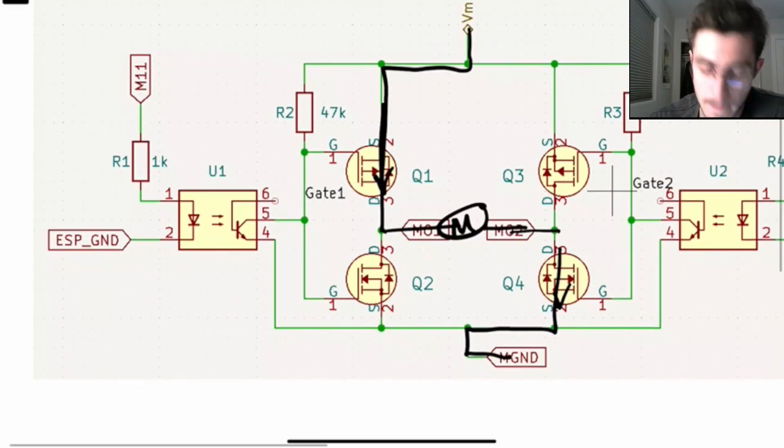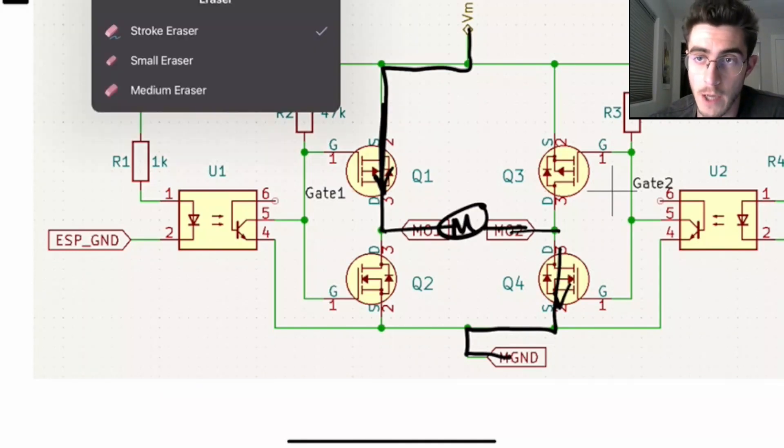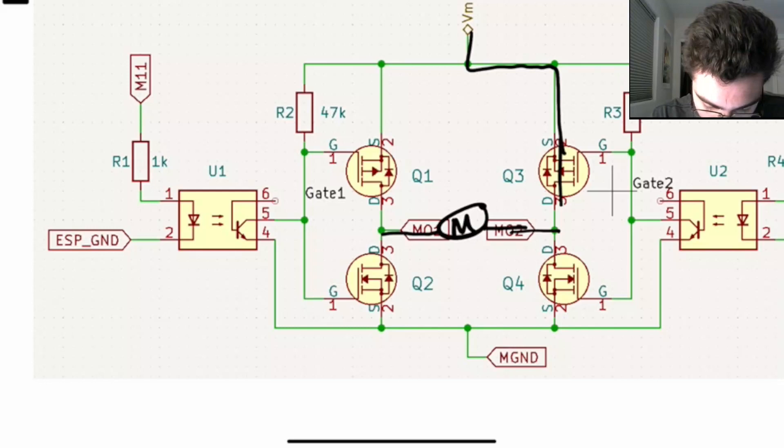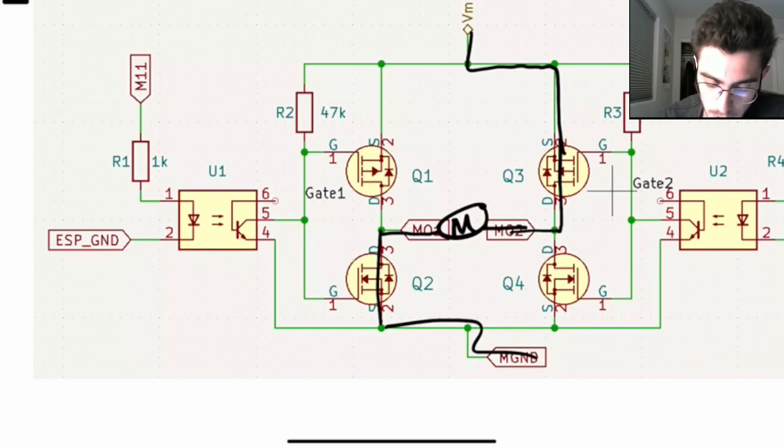Now the cool thing about this circuit is you can just do the complete opposite in order to turn the MOSFETs, sorry, to turn the motor in the other direction. So let's say you turn on Q2. And you turn on Q3. You then get the motor spinning the other way. So now we have full control of the direction of the motor. And that is the purpose of an H-bridge.